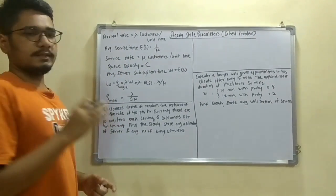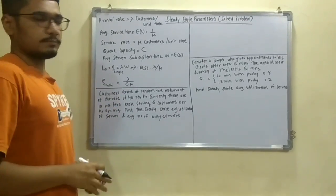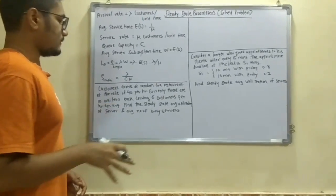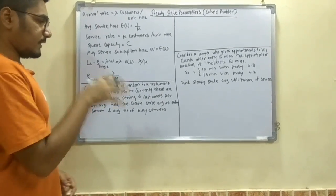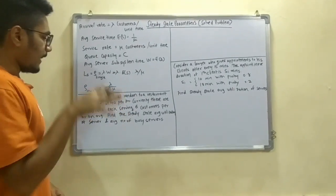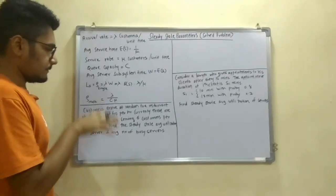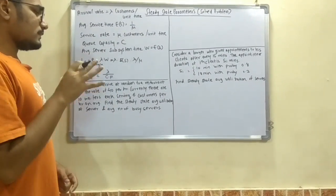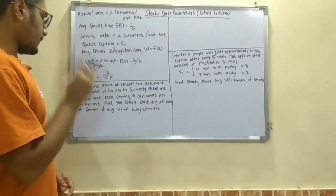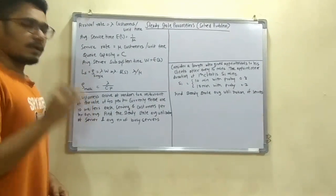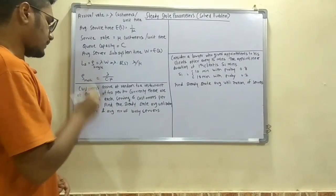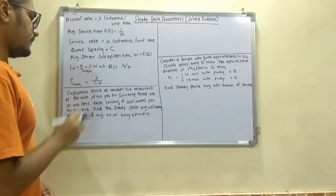Now this was some concepts regarding the steady state parameters. Now let us move on to the very first problem. The very first problem says that customers arrive at random to a restaurant at the rate of 40 customers per hour. Currently there are 10 waiters, each serving 6 customers per hour on average. Now you have to find the steady state average utilization of the server and the average number of busy servers.